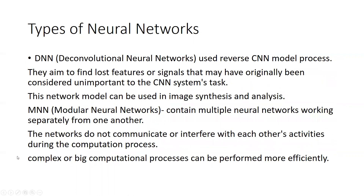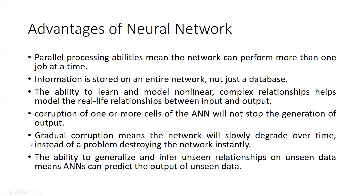We will discuss all these in Python as well. Next is the Deconvolutional Neural Network (DNN), which uses a reverse CNN model process. It aims to find lost features or signals that may have originally been considered unimportant to the CNN system, and can be used in image synthesis and analysis. After that, the Modular Neural Network (MN) contains multiple neural networks working separately from one another. The networks do not communicate during the computation process, allowing complex tasks to be performed more efficiently.